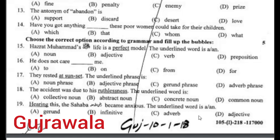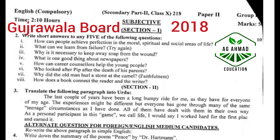Gujranwala Board 2018 10th English subjective type paper, Group 1. Write short answer for any five of the following questions: How can people achieve perfection in moral and spiritual matters? Unit 1. What can we learn from failure? Unit 3. Why is it necessary to keep away from the wound? Unit 4. What is one good thing about newspapers? Unit 6. How can career counselors help young people? Unit 9. Who looked after the paper? Unit 11. Why did the old man hurl a stone? Unit 13. How does a book connect the reader and the writer?